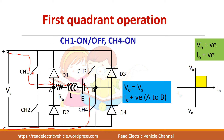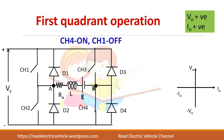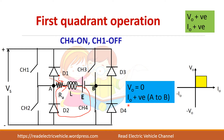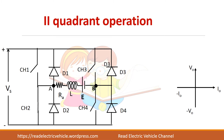CH1 will be turned off for some time. When CH1 is turned off, current starts to freewheel through diode D2 because CH4 is kept on. During this freewheeling period, output voltage is zero and current remains positive, flowing from A to B.